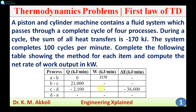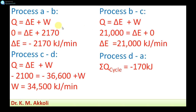Using the first law of thermodynamics for each process, we need to find the unknown values. The first law states: rate of heat transfer Q equals change in internal energy delta E plus work transfer W. For process A-B, Q is zero and W is 2170 kilojoules per minute, so from the equation delta E equals Q minus W, the change in internal energy is minus 2170 kilojoules per minute.